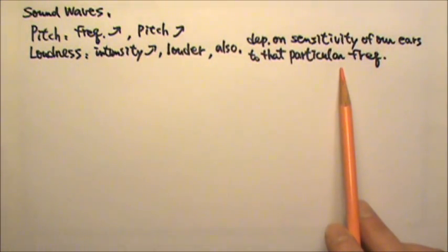Our audible frequency range is between 20 to 20,000 Hz. And the human ear is the most sensitive between 2,000 and 5,000 Hz.